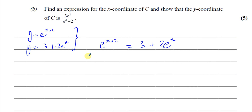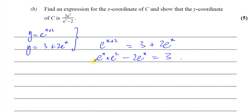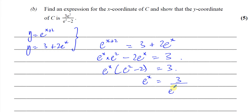Bringing everything to one side: e to the power of x plus 2 is the same as e to the power of x times e to the power of 2. I'm splitting it up because I want to bring the e to the power of x terms together. Taking away 2e to the power of x from both sides, I can see e to the power of x is a factor of both terms, giving e to the power of x times (e squared minus 2) equals 3. So e to the power of x equals 3 over (e squared minus 2).